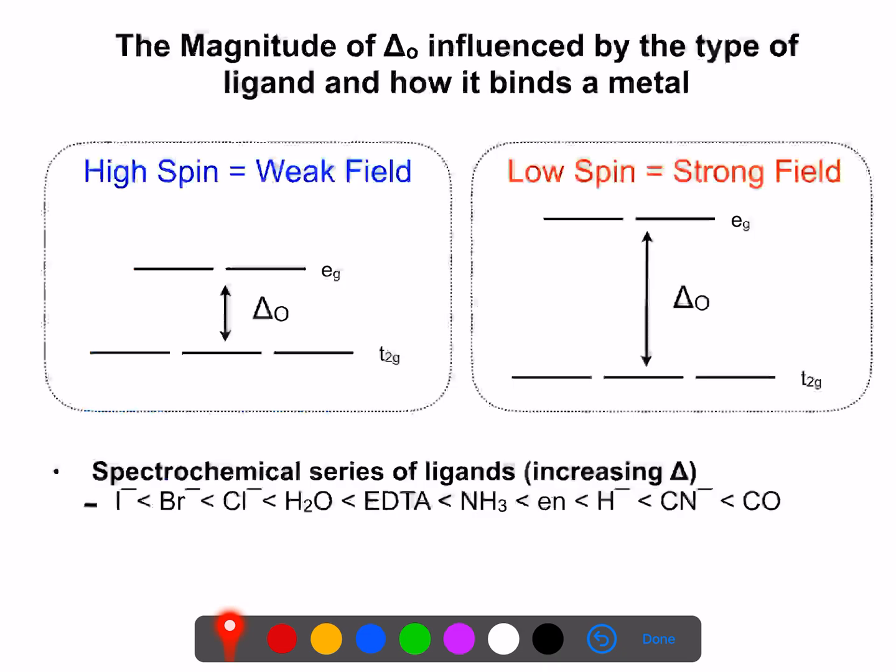So the important thing to take note is, when we talked about delta-octahedral, we can characterize delta-octahedral by whether we have a weak field, which gives rise to high spin complexes, and this is a small delta-octahedral, or we can have a strong field, which means you have a large delta-octahedral, which is going to result in a low spin complex.